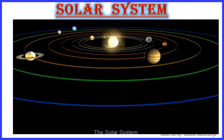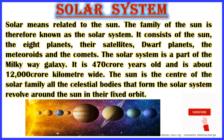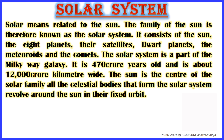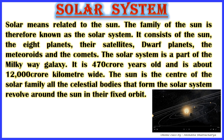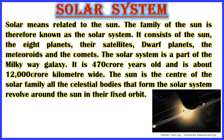The solar system. 'Solar' means related to the Sun, so the family of the Sun is known as the solar system. It consists of the Sun, the eight planets, their satellites, dwarf planets, meteoroids, and comets.